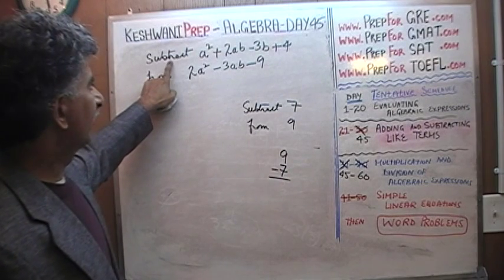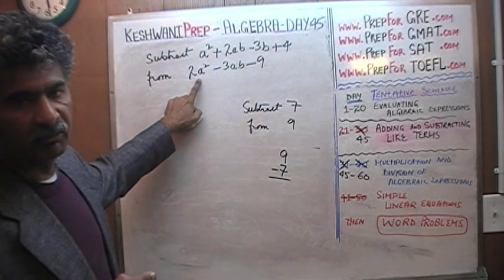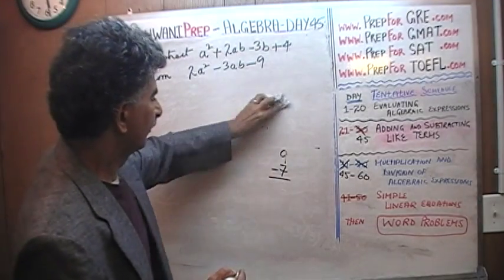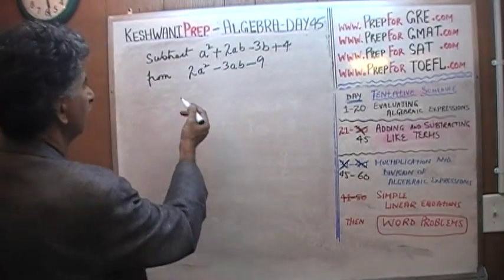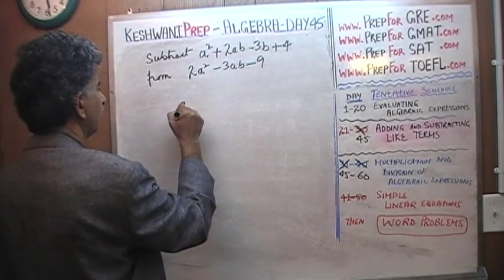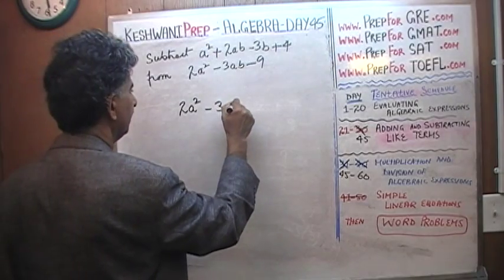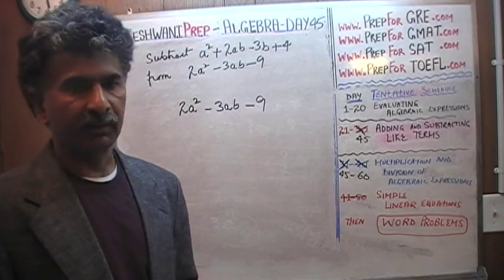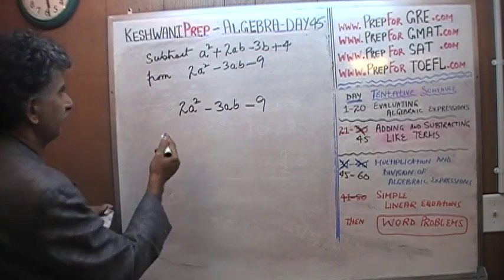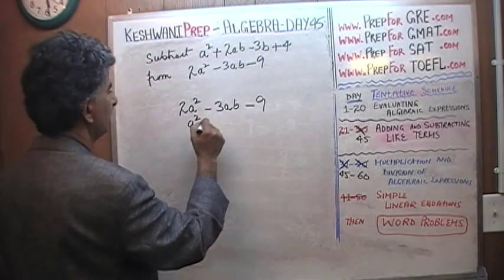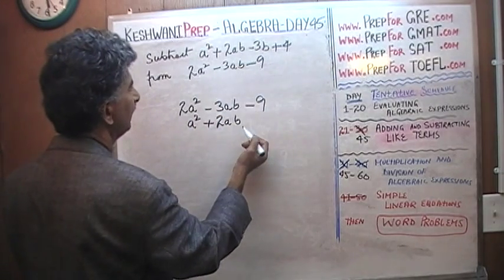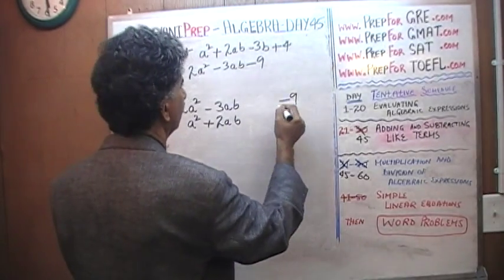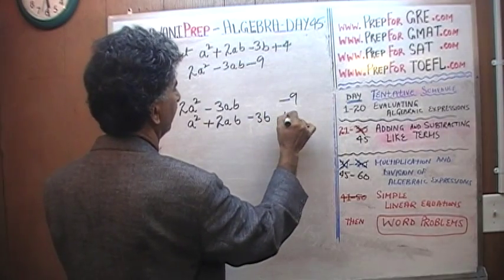The exact same logic applies here. We need to subtract the top expression from the bottom expression. The expression from which we are subtracting has to be written first — which is 2a squared minus 3ab minus 9. The expression being subtracted goes at the bottom: a squared plus 2ab minus 3b plus 4. Since there is no b-term in the first expression, we push negative 9 out to line things up.